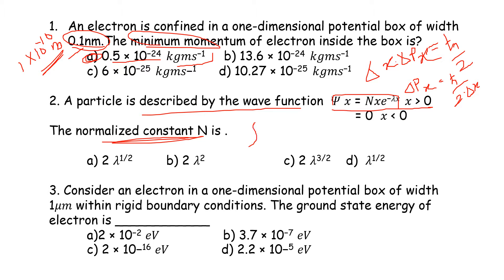Using the normalization condition: ∫ψ*ψ dx = 1. This gives N² ∫₀^∞ x² · e^(-2λx) dx = 1. Evaluating the integral, N² · (2λ)⁻³ · 2 = 1, so N = 2λ^(3/2) / √2. Option C is the correct answer.